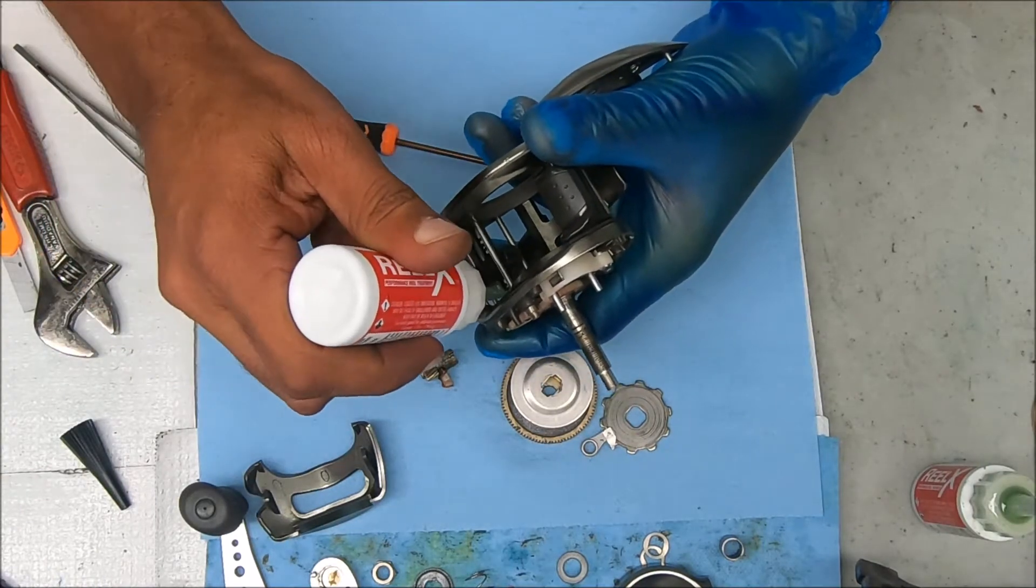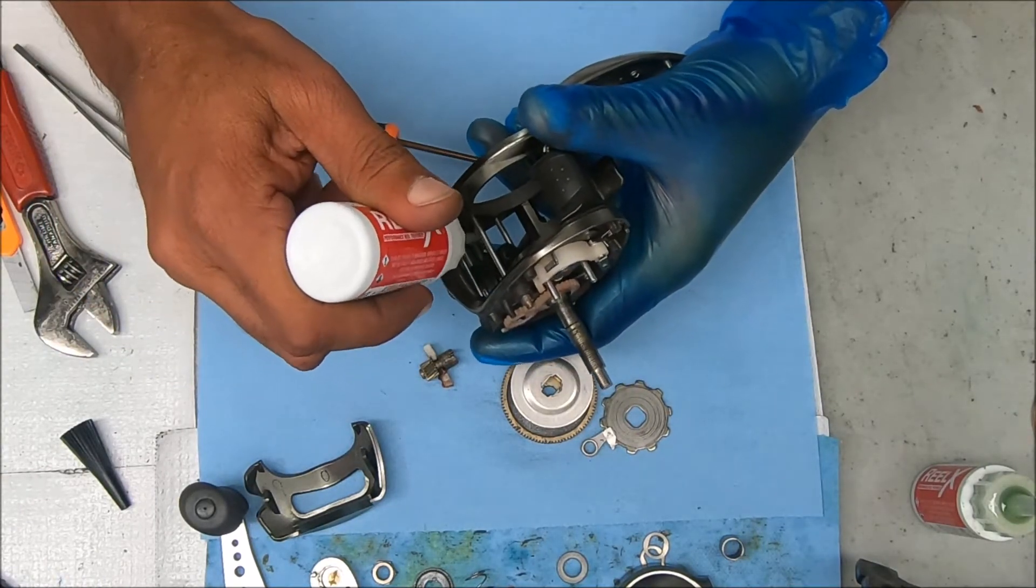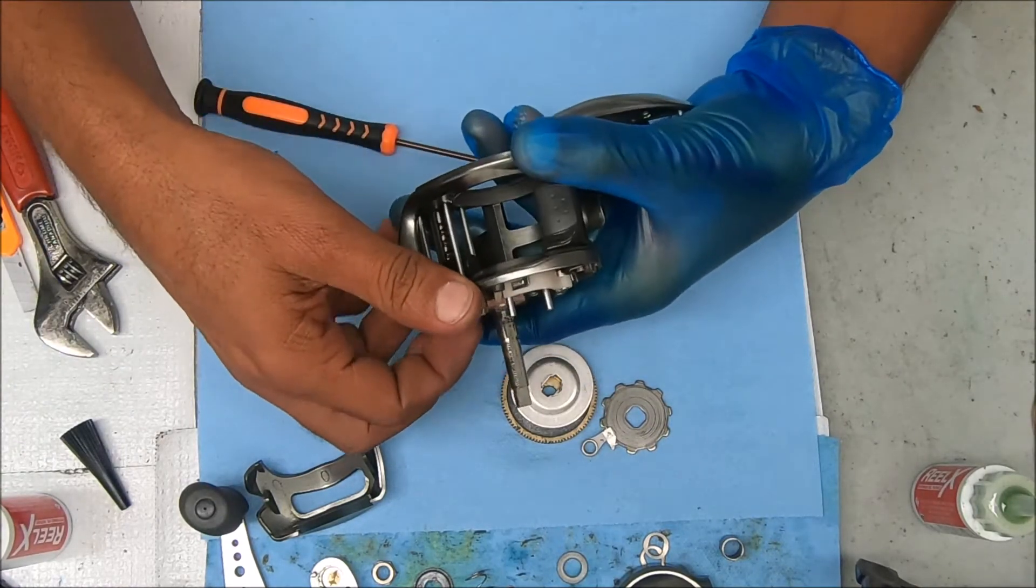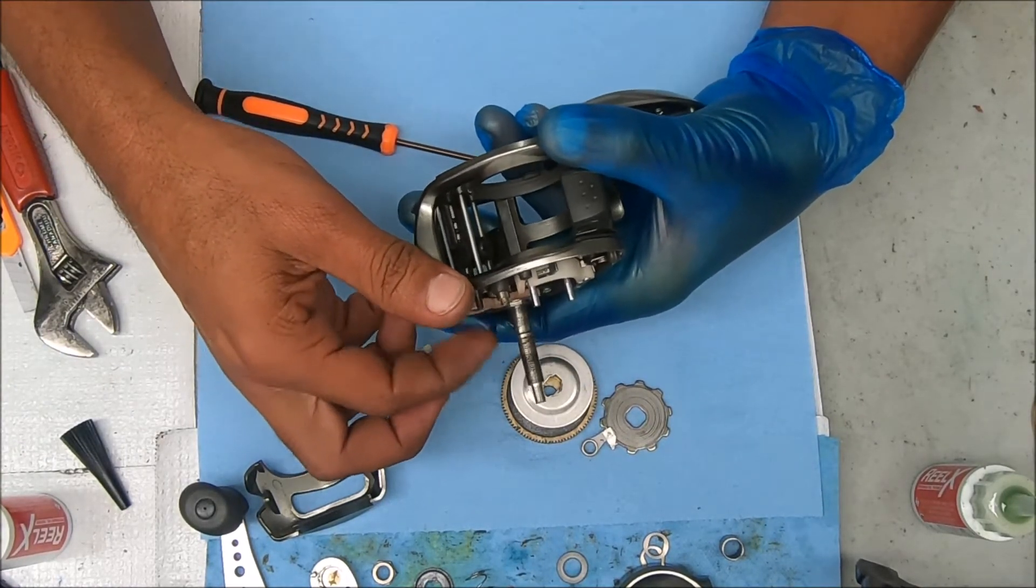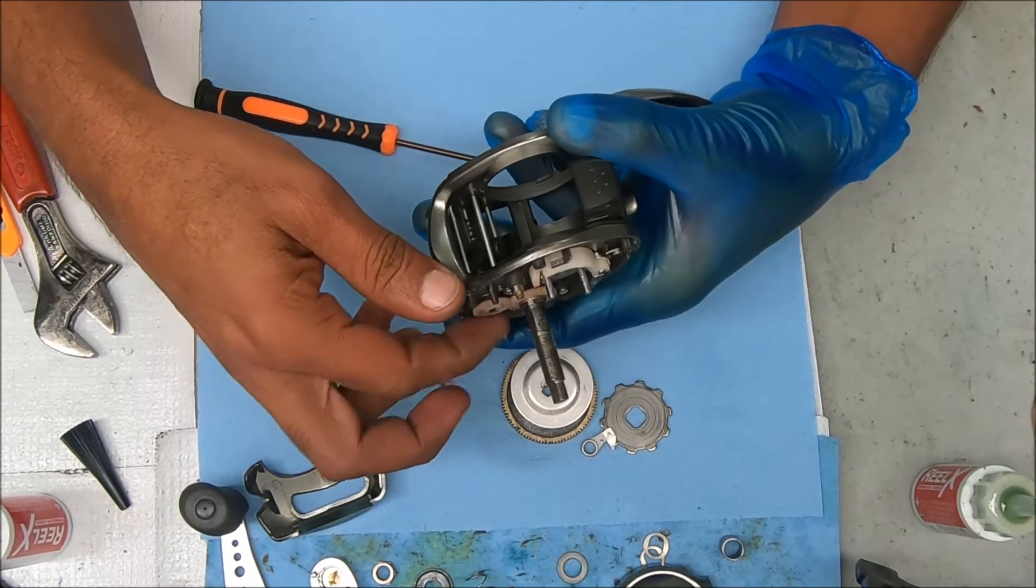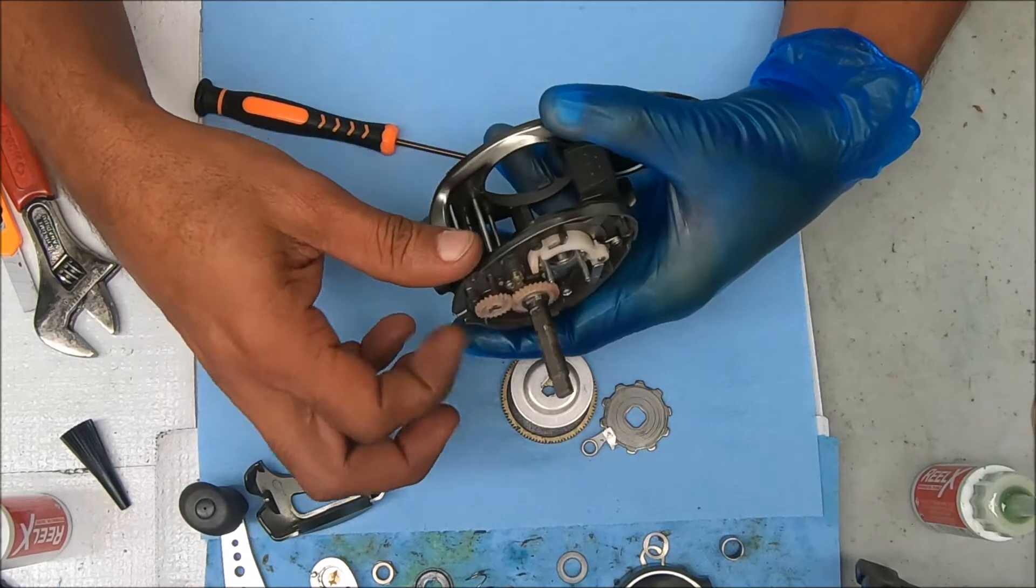So let's go ahead and add a couple drops of oil into that worm. Just kind of work that back and forth. That also feeds into the pawl, so kill two birds with one stone like that.